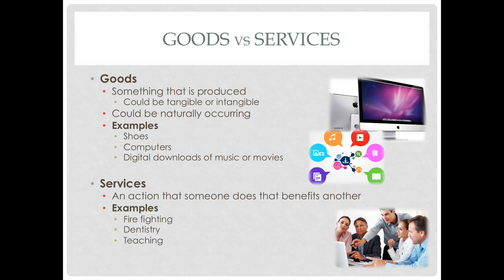Some examples of goods are shoes, computers, and tools. Those are things that are tangible — they can be touched, maneuvered, and moved. But goods can also be intangible. Something like a digital download of movies or music can't really be touched; you can't hold that in your hand, but it would still be considered a good.